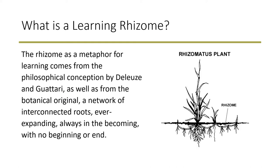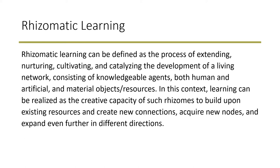What is a learning rhizome to begin with? The rhizome as a metaphor for learning comes from the philosophical conception by Deleuze and Guattari, as well as from the botanical original — a network of interconnected routes, ever expanding, always in the coming, with no beginning or end. Rhizomatic learning can be defined as the process of extending, nurturing, cultivating, and catalyzing the development of a living network consisting of knowledgeable agents, both human and artificial, and material object resources.